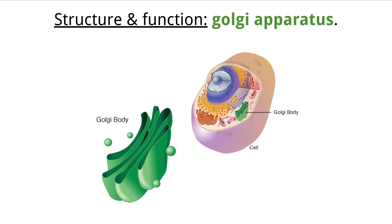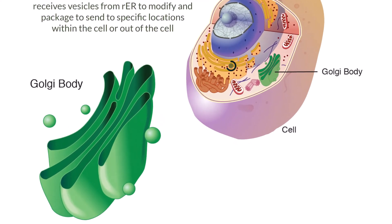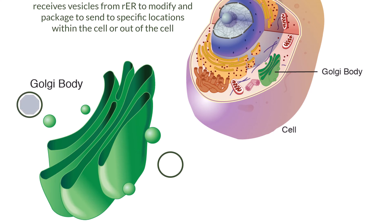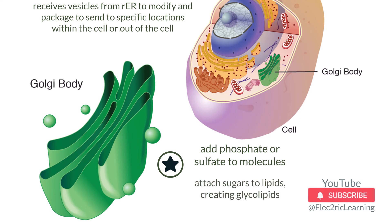The next organelle we have is the Golgi apparatus. This structure works with products created from the rough endoplasmic reticulum and can modify and package proteins that are then sent to a final, specific location within the cell or outside of the cell. The Golgi creates the final vesicle needed for this transport to happen. The modification function of the Golgi can alter the protein from the rough endoplasmic reticulum before it is shipped off in its final vesicle, which could mean adding phosphate or sulfate groups to the protein or attaching sugar chains to make it a glycolipid molecule.